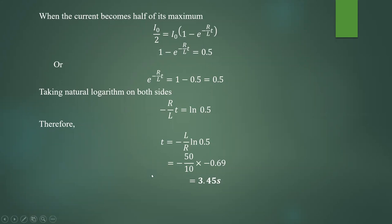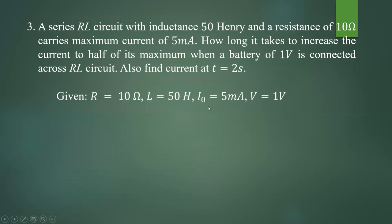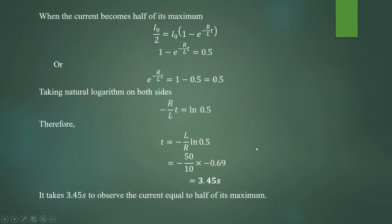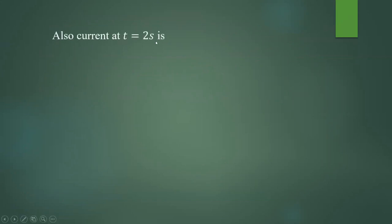Next, you have to find the value of current at T equal to 2 seconds. They have also asked another question: find current at T equal to 2 seconds. Maximum current I0 is given, resistance R is given, L is given, voltage V is given. Current at T equal to 2 seconds is given by the expression: I equal to I0 into 1 minus e to the power minus R by L into T.